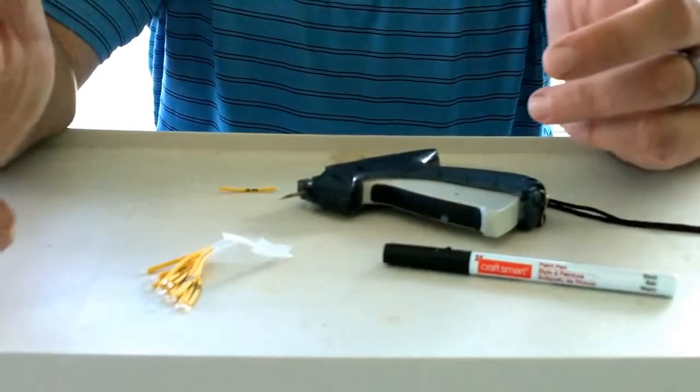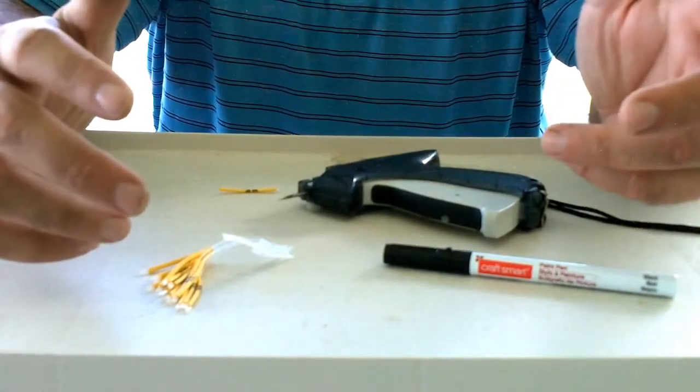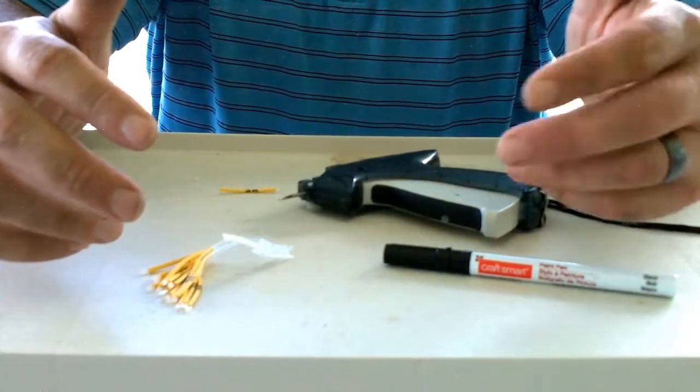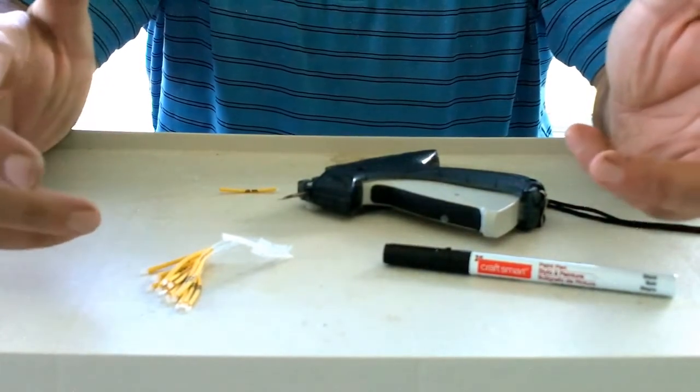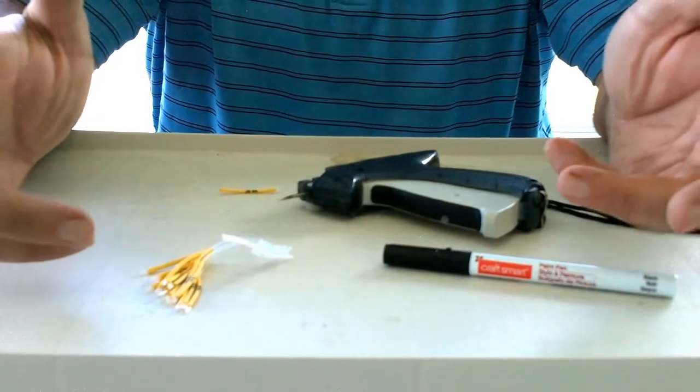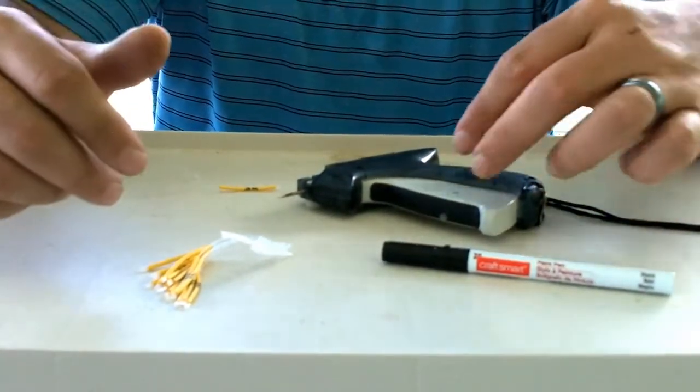If you look up fish tagging, a lot of times you'll see Floyd tags, the t-bar ones that are the most popular that are out there. You get like a hundred tags but it costs you like $90 and that's without the tagging gun.